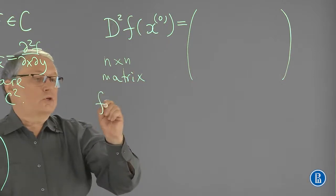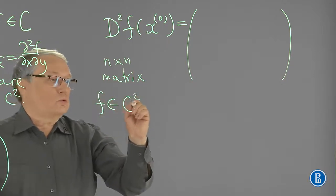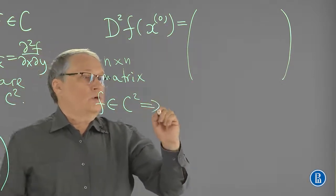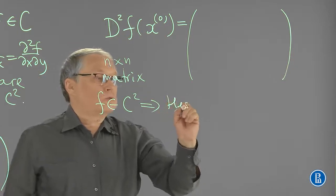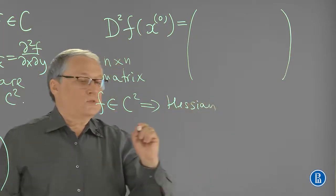So, given a function f which belongs to C2, this matrix, Hessian, is symmetric.